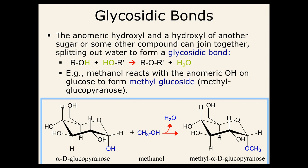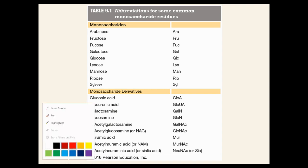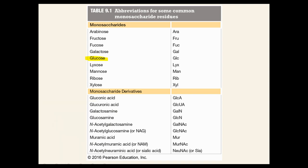There are abbreviations for common monosaccharide residues. The important ones to know: glucose is GLC, galactose is GAL, fructose is FRU, and ribose is RIB. We'll keep these in mind as we move forward.